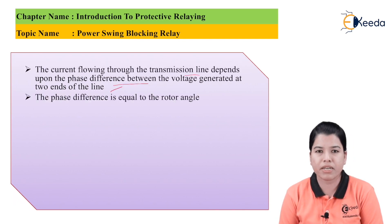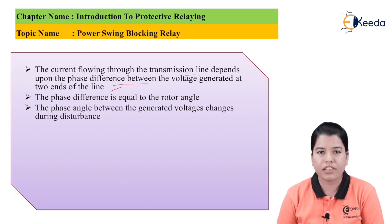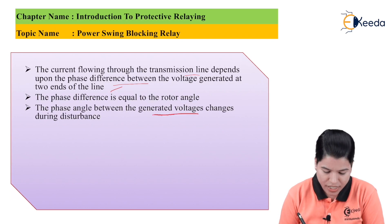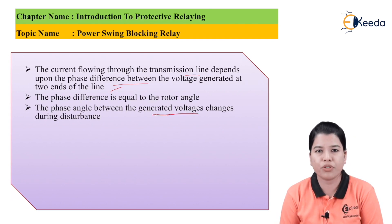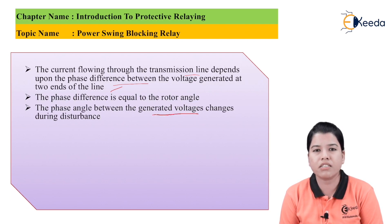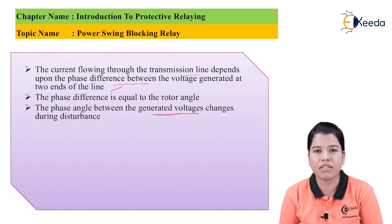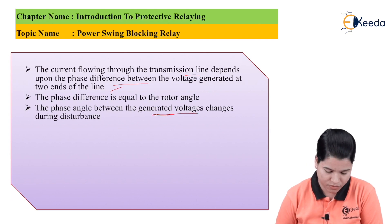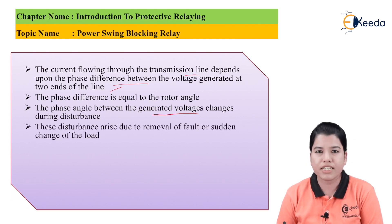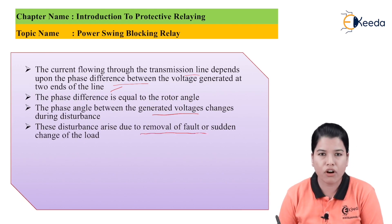This phase difference is basically equal to the rotor angle. The phase difference between the generated voltages will change due to disturbance. This disturbance is caused when the circuit breaker clears the fault — whenever the circuit breaker clears the fault there is a huge amount of power swing, causing a disturbance in the rotor angle. These disturbances arise due to the removal of fault or a sudden change of load.